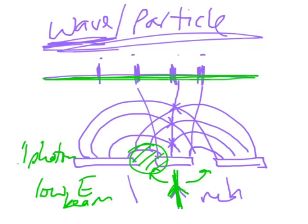And the other case is true. If we detect nothing, then we know it went through the other one, and we still don't get an interference pattern. So that matches the particle nature of light.